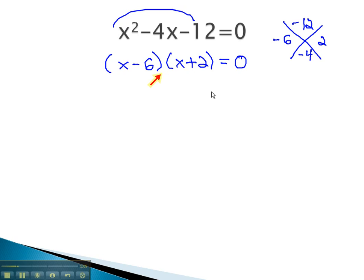Now that we have it factored, we know one of those factors must be zero. So we set up two equations, one for each factor. Either the x minus 6 equals zero, or the x plus 2 equals zero.